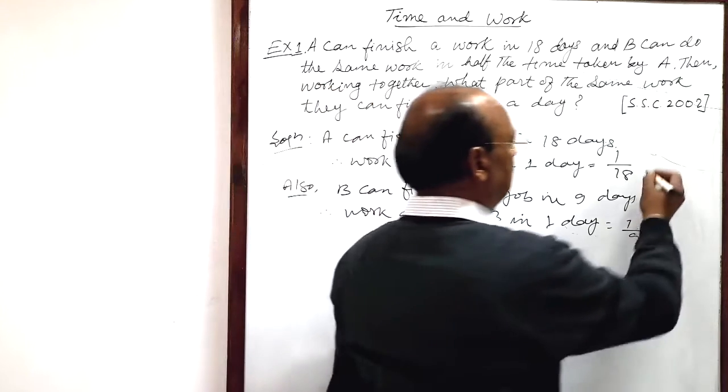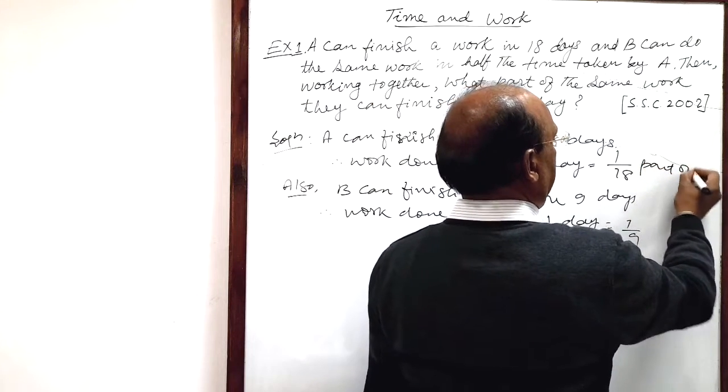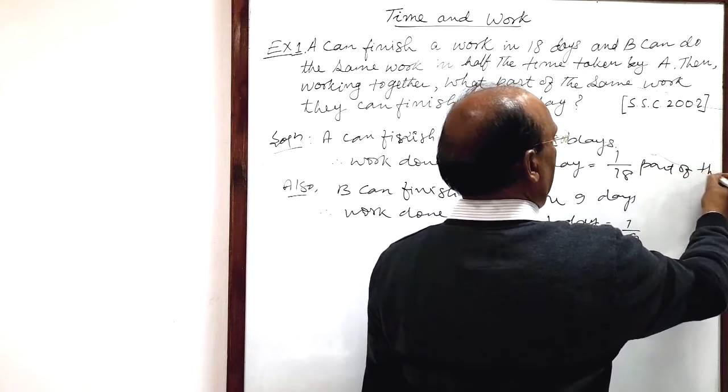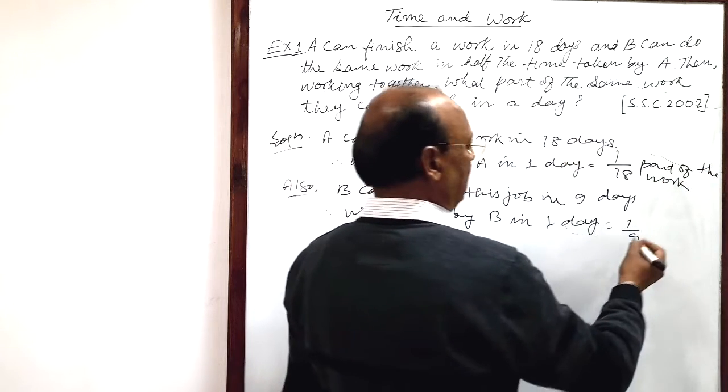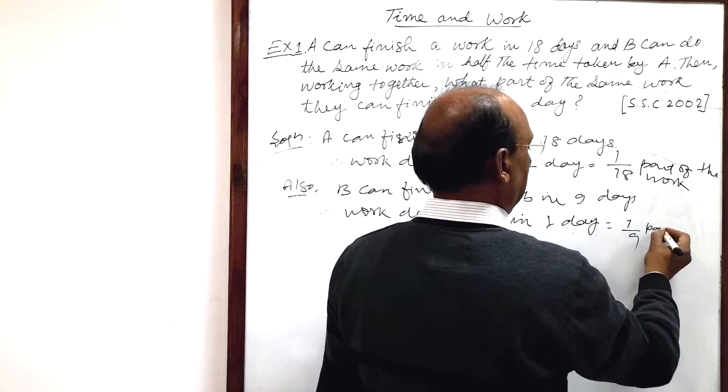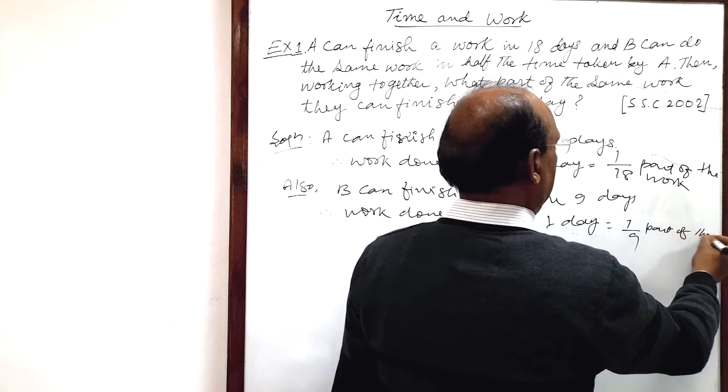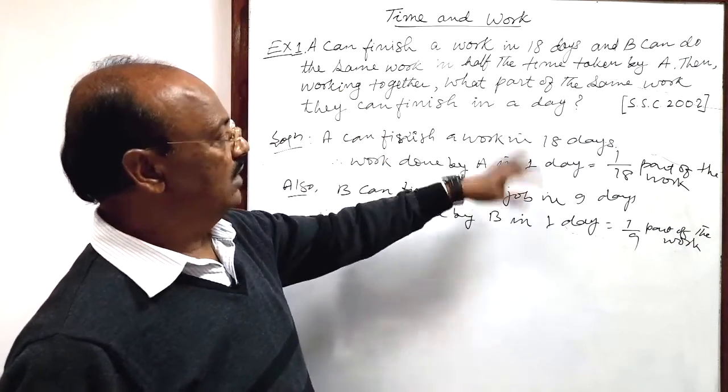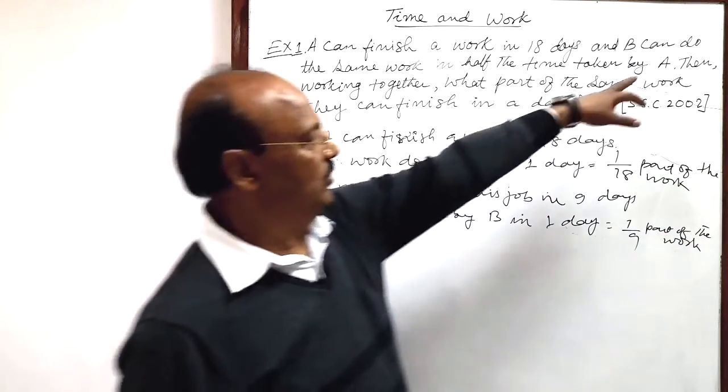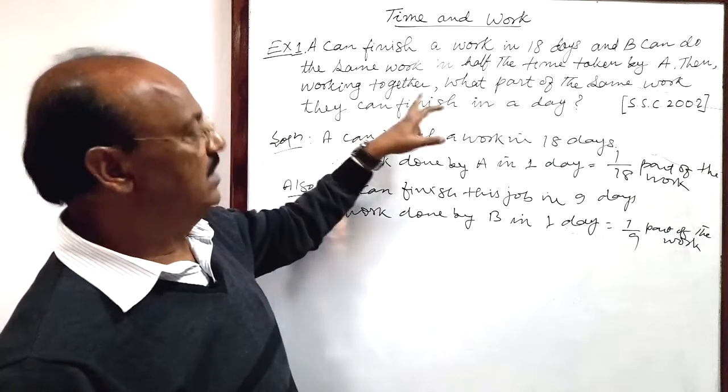So understood, this is part of the work. This much is 1 by 18 part of the work. Here B can do 1 by 9 part of the work. And if both work together, the question is, then working together.